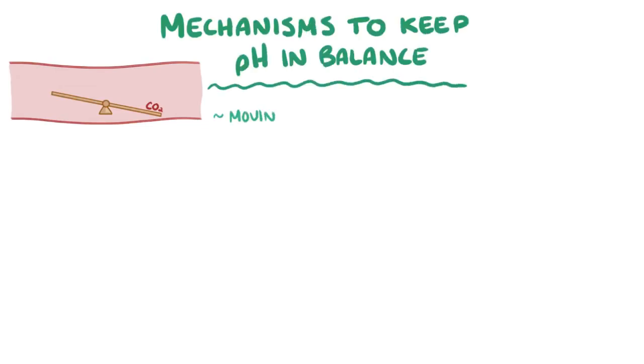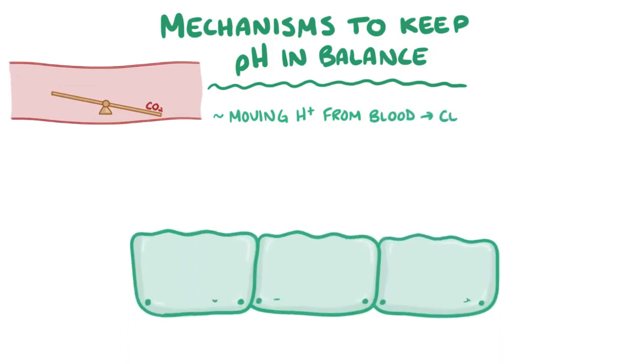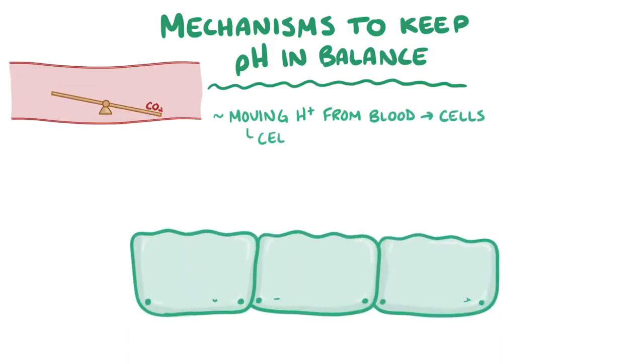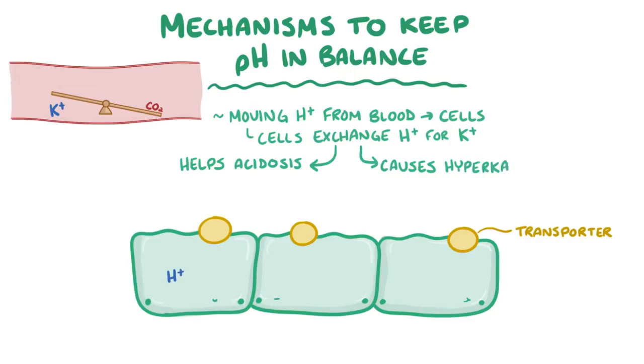If there's a decrease in the bicarbonate concentration in the blood, which threatens to decrease the blood pH, the body has a number of important mechanisms to help keep the pH in balance. One of them is moving hydrogen ions out of the blood and into cells. To accomplish this, cells usually have to exchange a hydrogen ion for a potassium ion, using a special ion transporter located across the cell membrane. So in order to help compensate for an acidosis, hydrogen ions enter cells and potassium ions leave the cells and enter the blood. This might help with the acidosis, but it results in hyperkalemia.